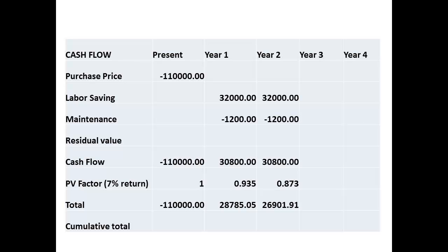Using the same principle for the second year, we have the same cash flow, but must multiply this by 0.873, which gives a figure of $26,901.91 for the second year. The third year will give a present day value of $25,141.97.